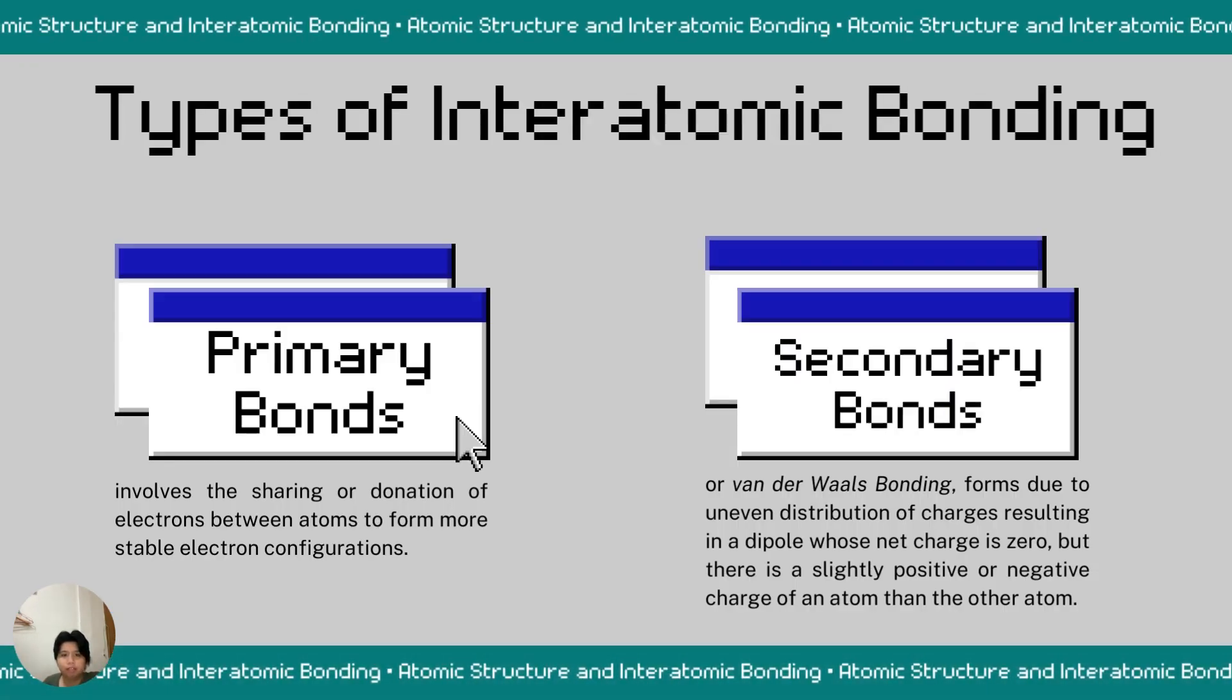There are two types of interatomic bonding. First is the primary bond. It includes the transfer of electrons from one atom to another in order to create more stable electron configurations. Second is the secondary bonds or known as Van der Waals. A dipole with a net charge of zero but it is a slightly positive or negative charge on one atom compared to the other. It occurs as a result of an unequal distribution of charges.